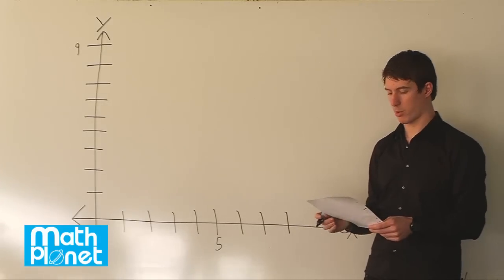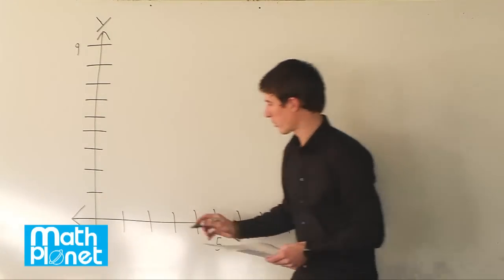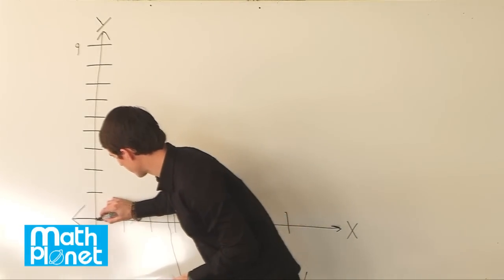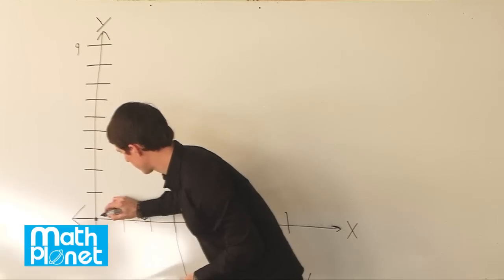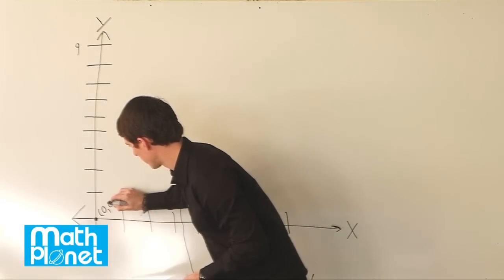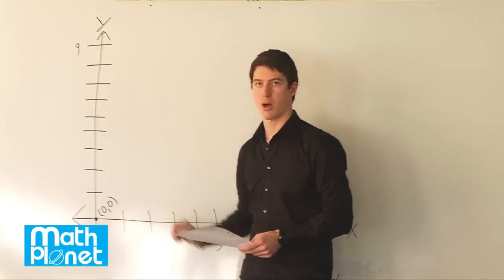The first one is the origin, the point is 0, 0. So of course, if it's 0, 0, it's right here, 0, 0. So we always write x, y.